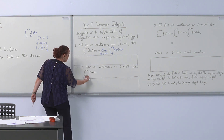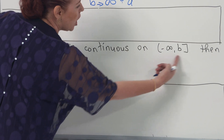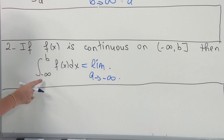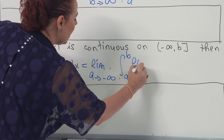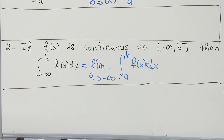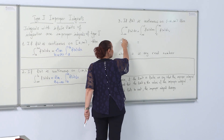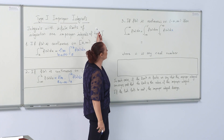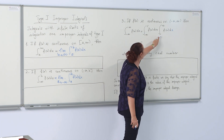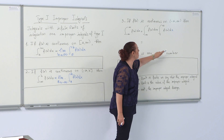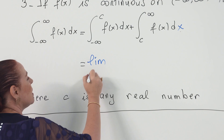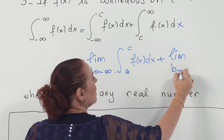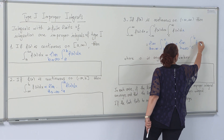If the infinite limit is in the lower limit and the function is continuous on this interval, then you have the limit as a goes to minus infinity of the integral from a to b of f of x dx. Likewise, when both limits are infinite, you must first split the integral at any real number c. So you have the limit as a goes to minus infinity of the integral from a to c of f of x dx, plus the limit as b goes to infinity of the integral from c to b of f of x dx.